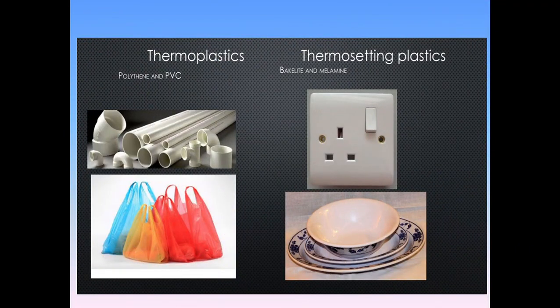These are examples of thermoplastics and thermosetting plastics. Polythene is used for bags, and PVC for plumbing pipes — those are thermoplastics. Thermosetting plastics include switchboards and bowls — like if you're putting hot soup in a bowl, it should not melt, so the bowl is a thermosetting plastic.